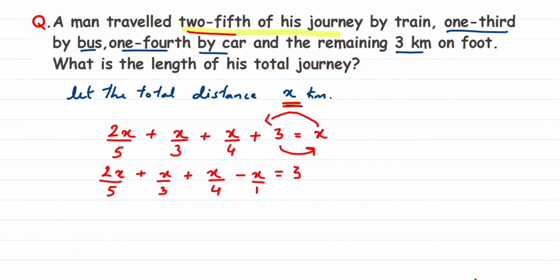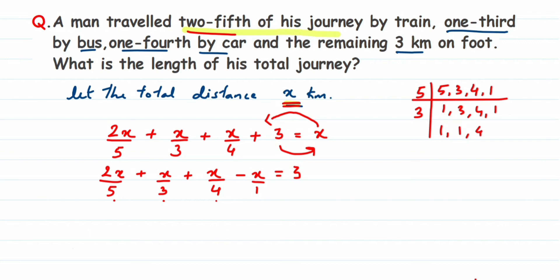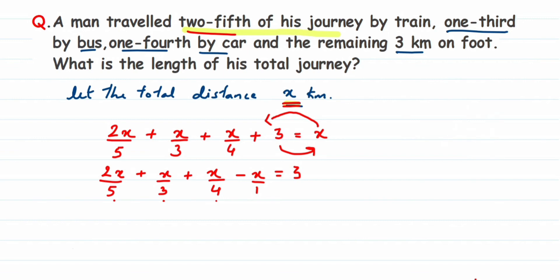To solve the left-hand side, we need the LCM of 5, 3, 4, and 1. Computing the LCM: 5 × 3 = 15, and 15 × 4 = 60. So the LCM is 60.